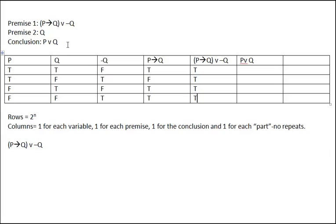The conclusion is p or q, which is also a disjunction. We look at the p column and the q column — it's true when both are true or one is true, and only false when both are false. So: true or true is true; true or false is true; false or true is true; false or false is false.